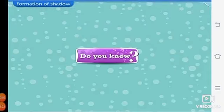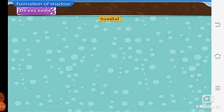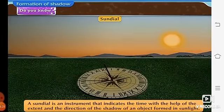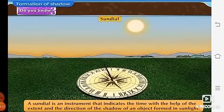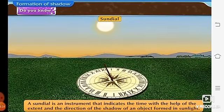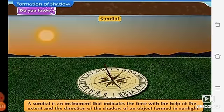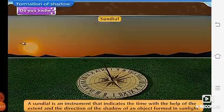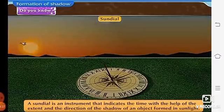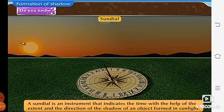Do you know? A sundial. A sundial is an instrument that indicates the time with the help of the extent and the direction of the shadow of an object formed in the sunlight. Means, due to the extent. Extent means what? Till which that shadow is reaching. Till which area.